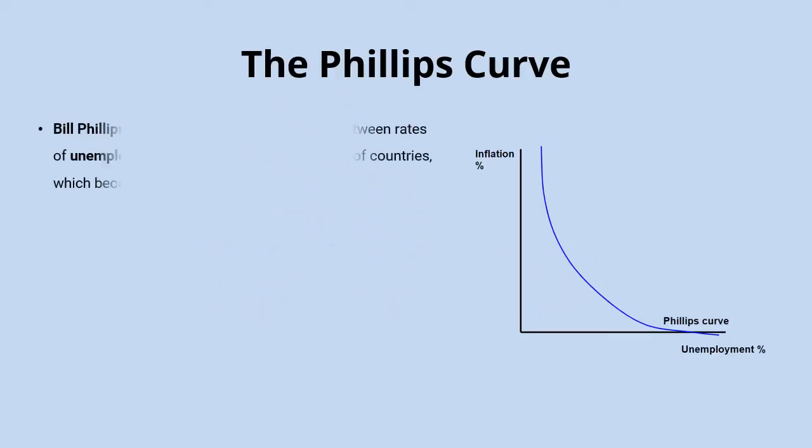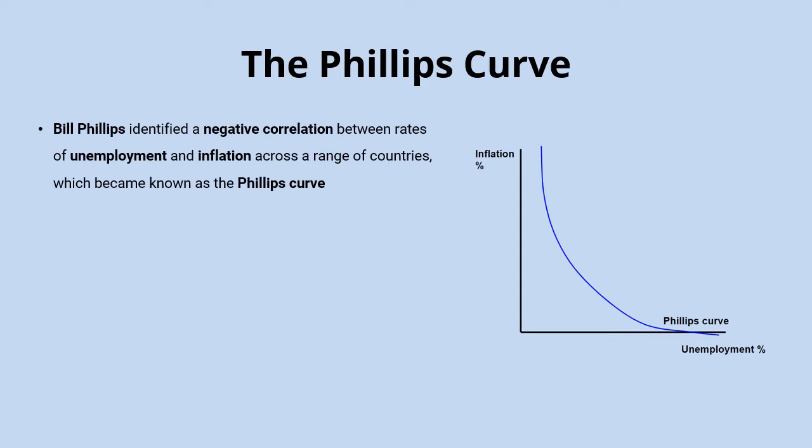The Phillips Curve came about when an economist called Bill Phillips studied inflation and unemployment data across a large number of different countries and found a negative correlation between the two.